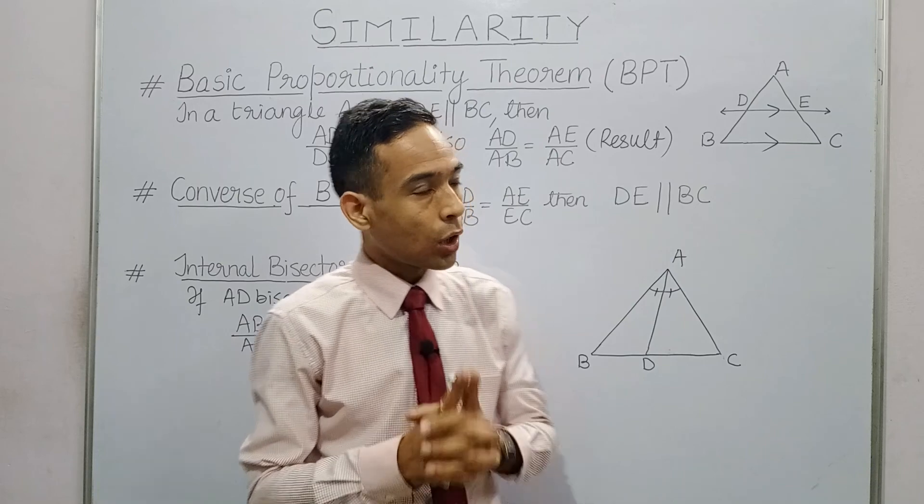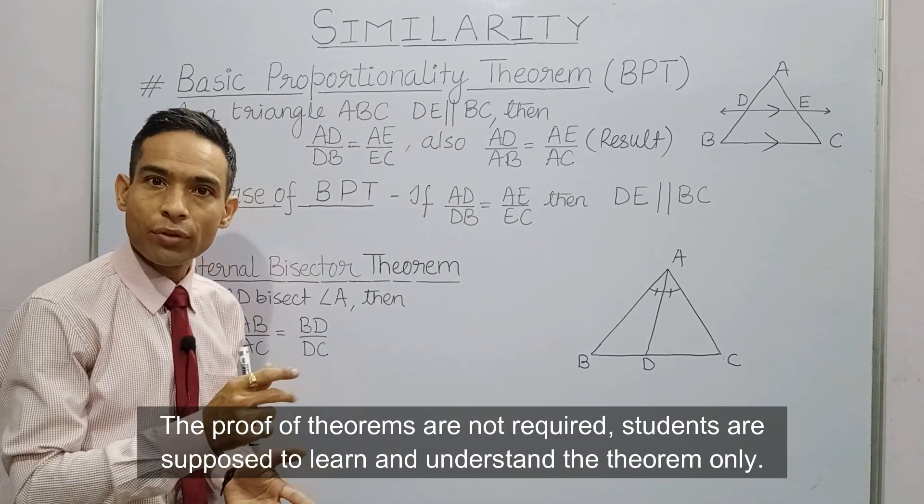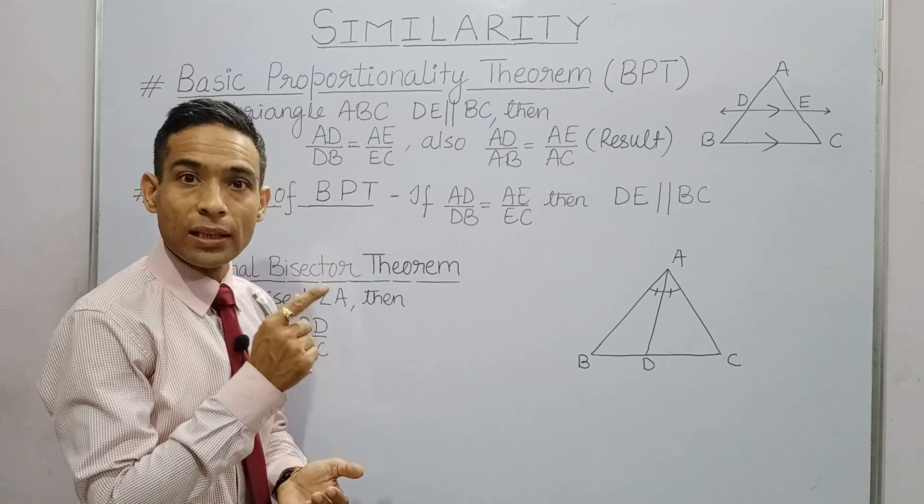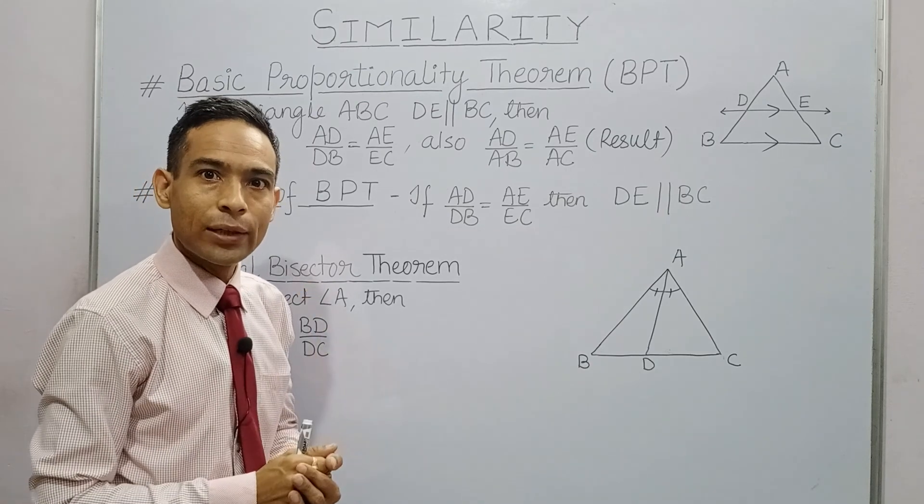According to our first theorem, Basic Proportionality Theorem, if we have a triangle such that there is a parallel line to one of the sides, and this parallel line cuts the other two sides distinctly at two points, then this parallel line cuts the other two sides in the same ratio.